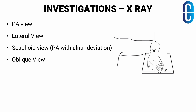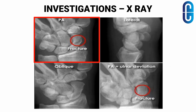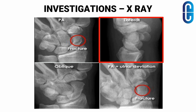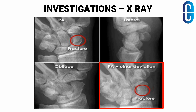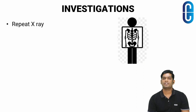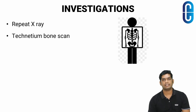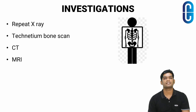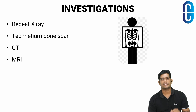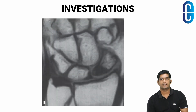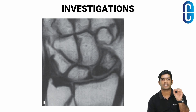For investigations, X-ray of the wrist joint is recommended with PA view, lateral view, scaphoid view or PA view in ulnar deviation, and oblique views. Even if the initial films are negative, the same X-ray should be repeated on follow-up, because resorption will cause widening of the fracture line. If the second radiographic examination is still equivocal, a technetium bone scan, CT, or MRI of the wrist is recommended. The bone scan is the most sensitive but the least specific. MRI can show loss of vascularity of the proximal part of scaphoid following a fracture.